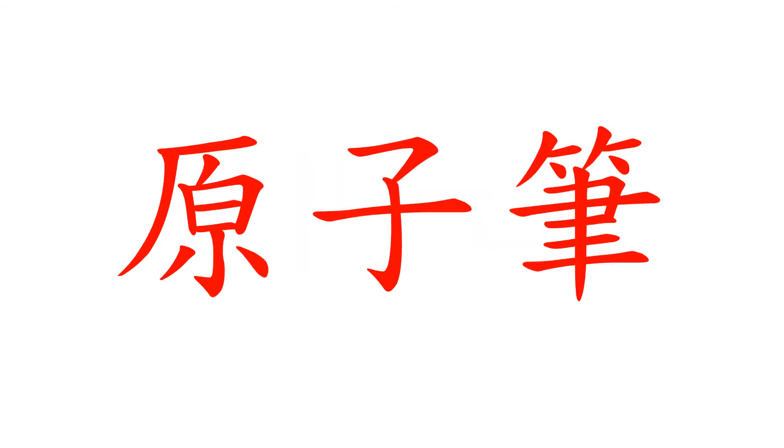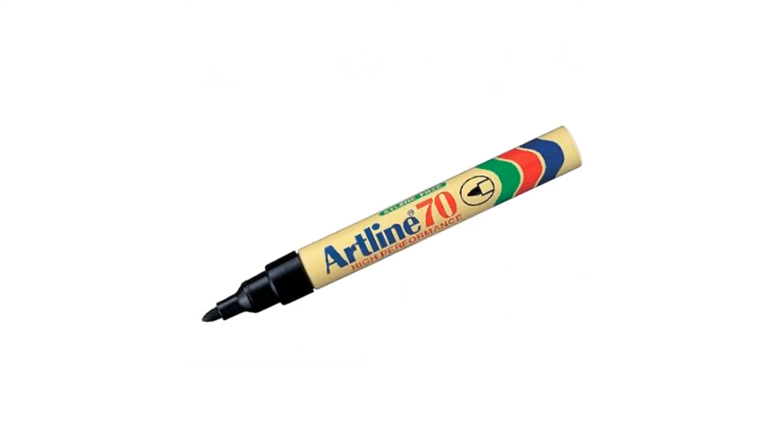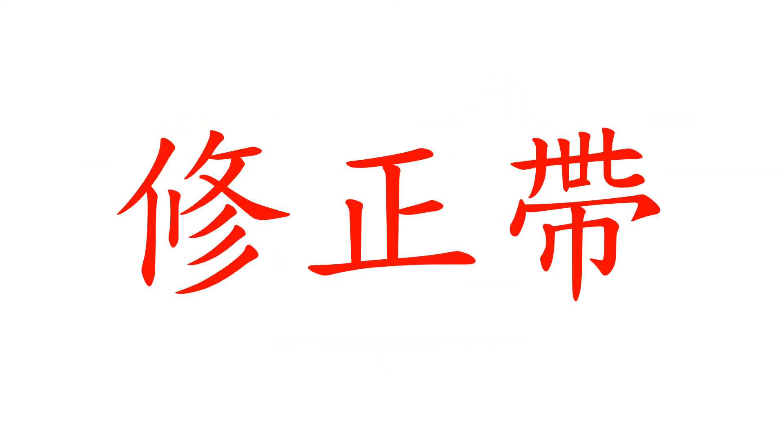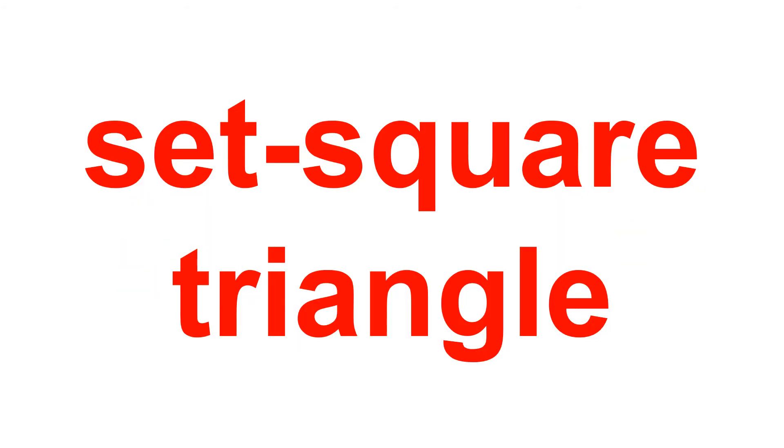Ball Pen (原子笔), Gel Pen (中性笔), Marker Pen (记号笔/麦克笔), Highlight Pen (荧光笔), Correction Tape (修正带), Ruler (直尺), Protractor (两角器), Set Square.